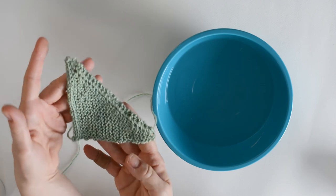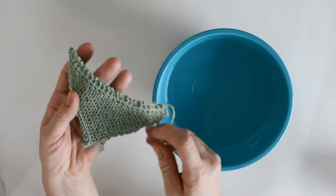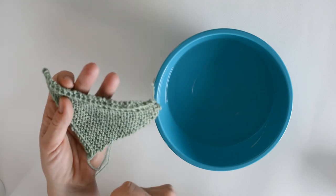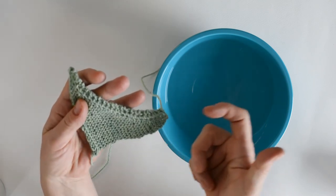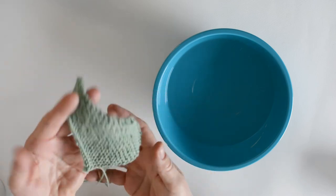I'm going to take my unblocked shawl. I generally do not weave in the ends until after I've blocked the shawl, just because I don't want them to pull out accidentally if I don't leave enough of a tail. So I'll leave my ends.